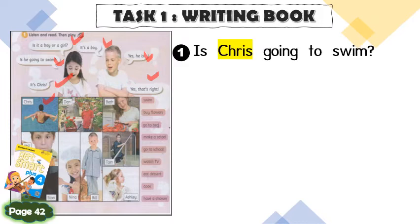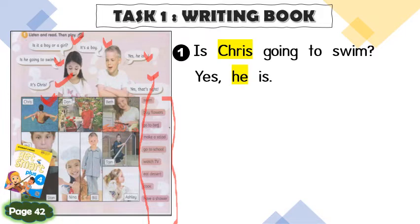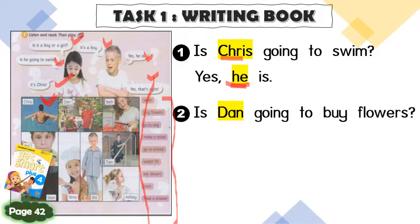For example, number one: 'Is Chris going to swim?' Refer to the first picture and choose a verb. So: 'Is Chris going to swim? Yes or no?' If yes, you say 'Yes, he is.' Make sure to use the pronouns in the answer — for the question use the name, and for the answer use the pronoun. Look at the second picture: 'Is Ben going to buy flowers?' — 'Yes, he is.' Ben is a boy, so we use 'he.'